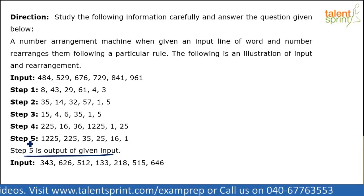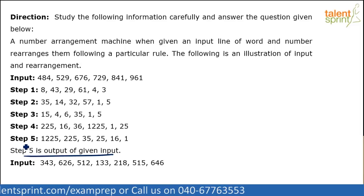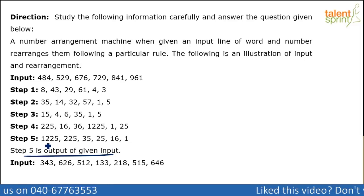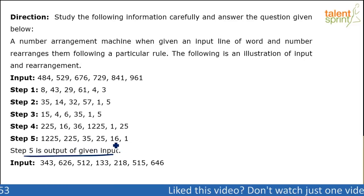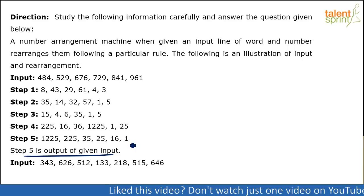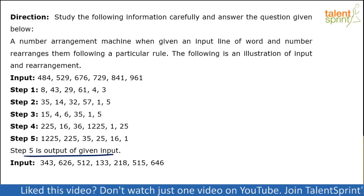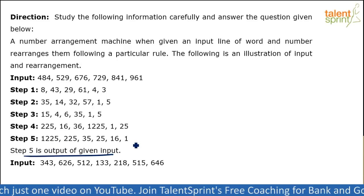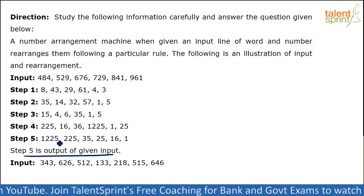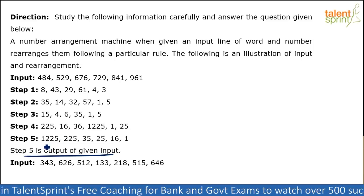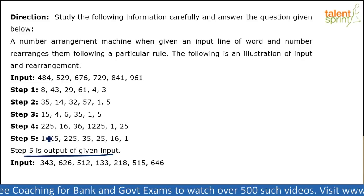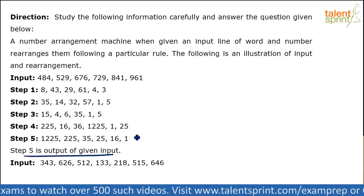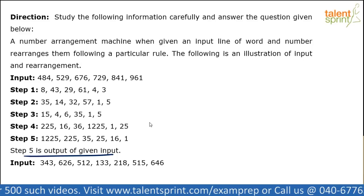Usually in machine input-output questions, we first look at the last step and try to identify the logic. But here, step 5 has got all different numbers: 12, 25, 225, 35, 16, and 1. All the numbers have changed completely from the input. So depending on step 5 alone to identify the logic is not the right approach here. The only observation we can make is that the numbers in step 5 have been arranged in descending order.